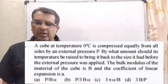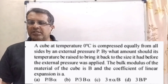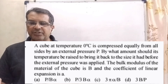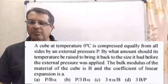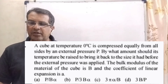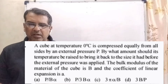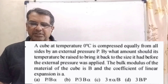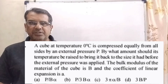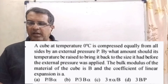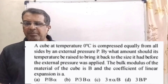Now here is the question. A cube at temperature 0°C is compressed equally from all sides by an external pressure P. The bulk modulus of the material is β and the coefficient of linear expansion is α. Options: (A) P/(βα), (B) P/(3βα), (C) 3Pα/β, (D) 3β/P.